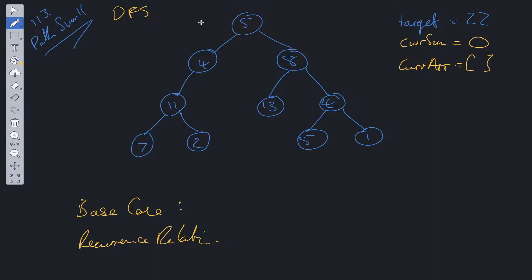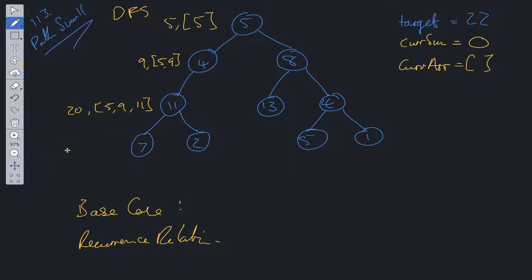At the first level, current sum would go to five and we'd have an array containing five. At four, current sum would equal nine. We'd have an array containing five and nine. At 11, current sum would equal 20, and we'd have an array containing five, nine, and 11. Current sum at the next node would be 27 — that would be five, nine, 11, and seven.